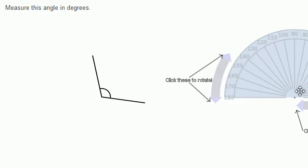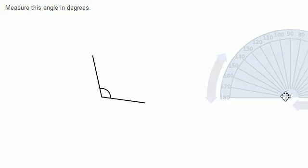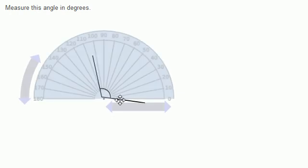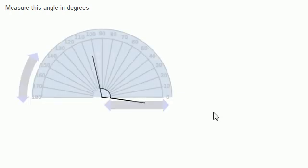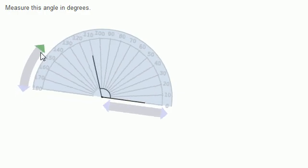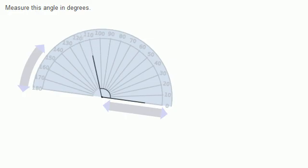Let's get another angle and try to measure this one right over here. Once again, place the center of the protractor at the vertex of our angle, and place the zero degree base of the protractor at this side of the angle. Let's just rotate it a little bit. That looks about right. The angle is now opening up — the other side is pointing to 110 degrees. So this is larger than 90 degrees; it's an obtuse angle. The last one was an acute angle. This is obtuse, 110 degrees. I got the right answer.